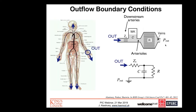For the outflow boundary condition, each terminal branch is coupled to a three-element windkessel model, which simulates the resistance to flow and the flexibility of downstream arteries. The resistance to flow is simulated by a resistance R, and the flexibility of arteries by a compliance, defined as the change in blood volume per change in blood pressure.